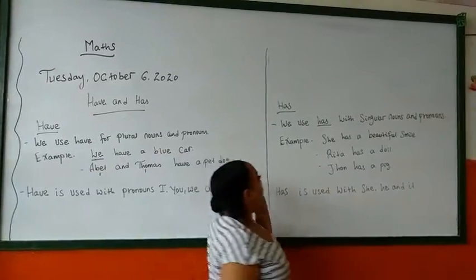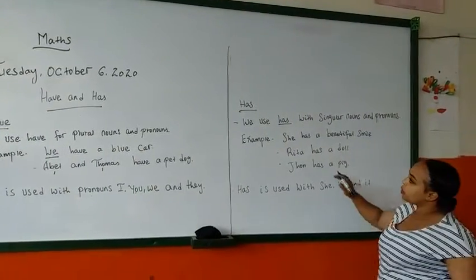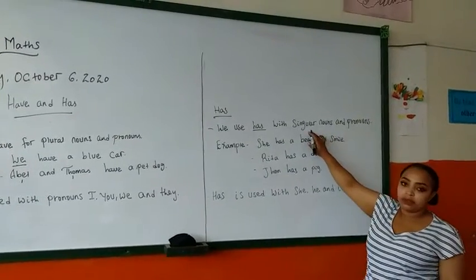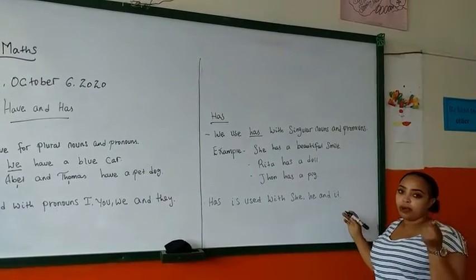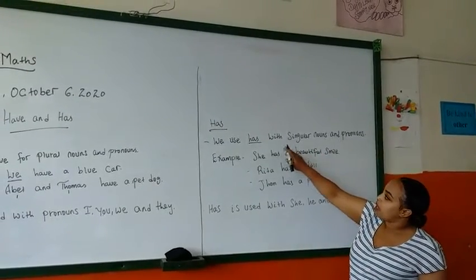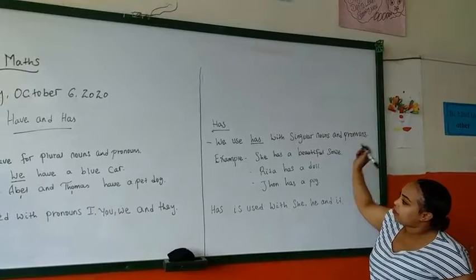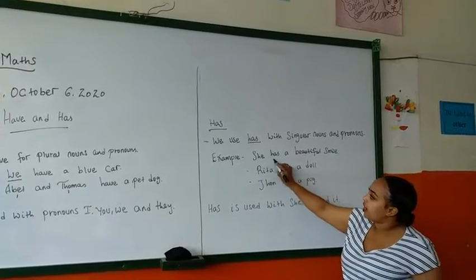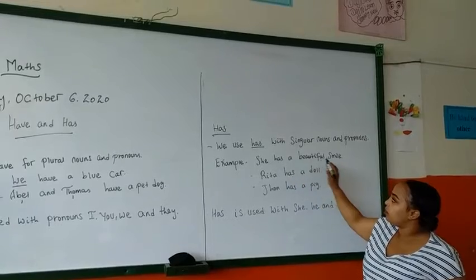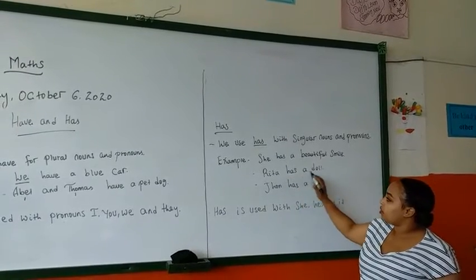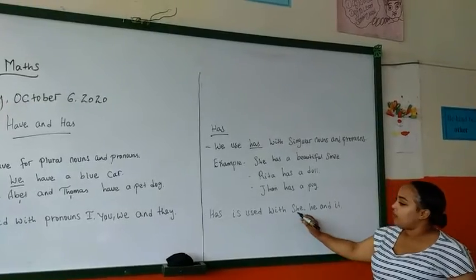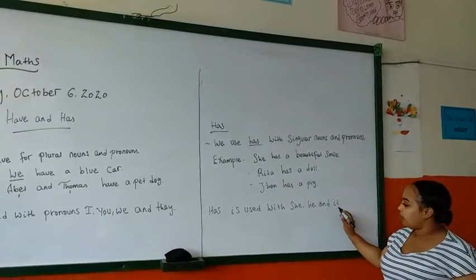Now, 'has.' We use 'has' with singular nouns and pronouns. Singular means only one person, one thing, or one animal. For example: 'She has a beautiful smile.' She is a pronoun. 'Rita has a doll.' 'John has a pig.' So 'has' is used with she, he, and it.